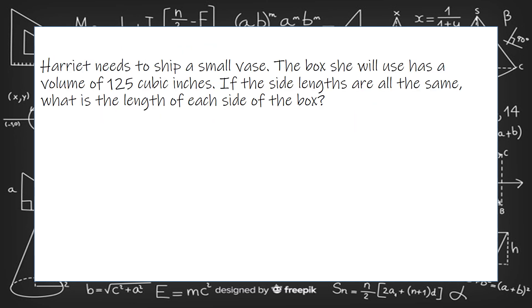Harriet needs to ship a small base. The box she will use has a volume of 125 cubic centimeters. If the side lengths are all the same, what is the length of each side? So you have volume equals the sides cubed, because it's length times width times height, but all three are the same.